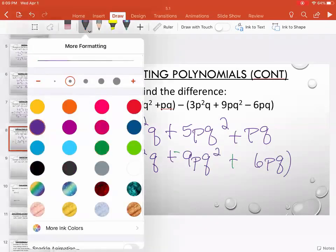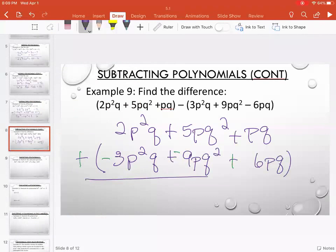2 plus a negative 3 is negative 1, or just negative p squared q. You do not have to put a 1. 5 plus negative 9 is negative 4. And 1 plus 6 is 7.